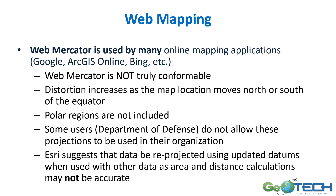A lot of what we see today online, especially on our computers, is Web Mercator. It's used by many online mapping applications such as Google, ArcGIS Online, Bing, and many others. Web Mercator is not truly conformable, and distortions increase as map locations move north or south of the equator. Polar regions are also not included. Some users — including the Department of Defense, because they require higher accuracy — do not allow these projections to be used for analysis. ESRI suggests that data be reprojected using updated datums when used with other data, as area and distance calculations may not be accurate.